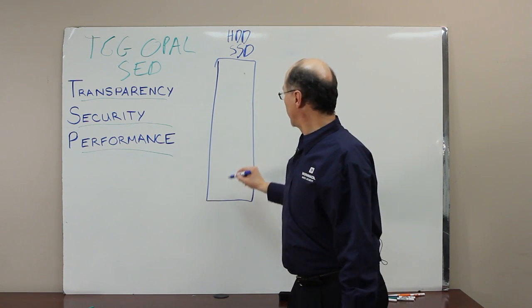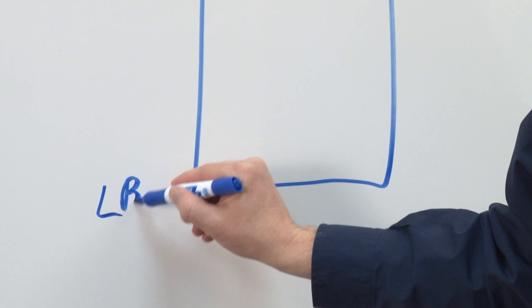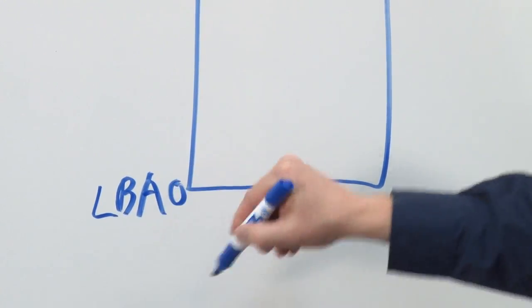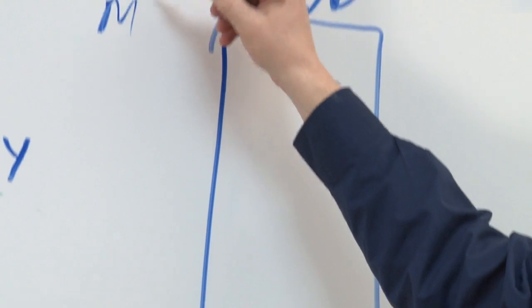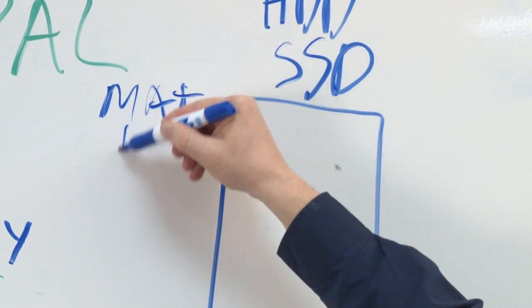In this representation, we have logical block addresses. Each of the sectors on this drive is numbered, starting from zero all the way up to max LBA.